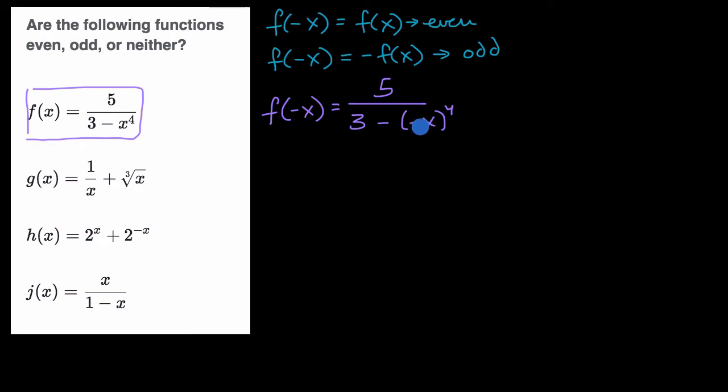Well, if you multiply a negative times a negative times a negative, how many times did I do that? If you take a negative to the fourth power, you're going to get a positive. So that's going to be equal to five over three minus x to the fourth, which is once again equal to f of x. And so this first one right over here, f of negative x is equal to f of x, it is clearly even.